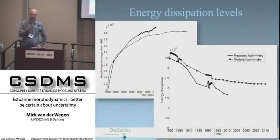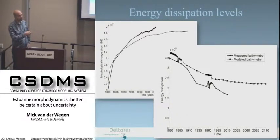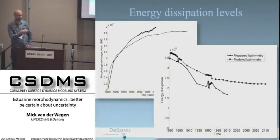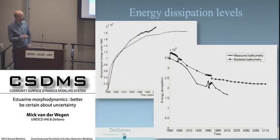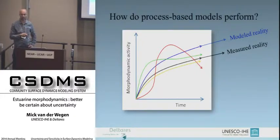Returning to the first movie — the decrease in energy dissipation levels — you can see that here also. This is the modeled development in energy dissipation levels, and the straight line is the calculated energy dissipation based on the measured bathymetries. Both systems show decreasing energy dissipation levels. From a certain point onwards, there's a lot of dredging involved, which may explain the discrepancy between the measured and model developments.